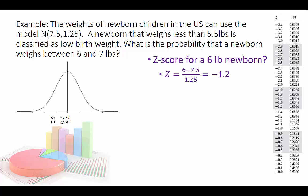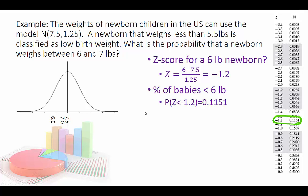Let's look for a z-score for a 6-pound newborn. I go 6 minus 7.5 over 1.25 — that's negative 1.2. Looking at that, I can find the percent to the left of 6.0. The probability that a kid weighs less than that is 11.51%, and the z-score is marked right there.